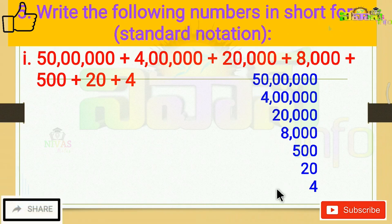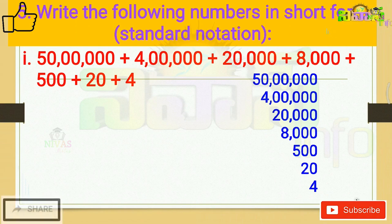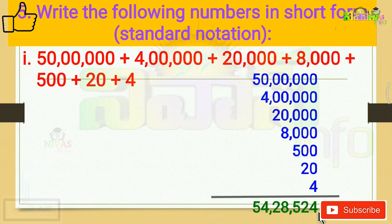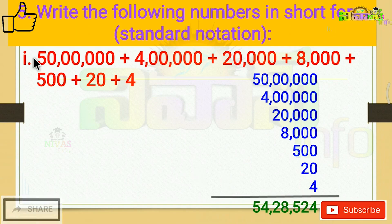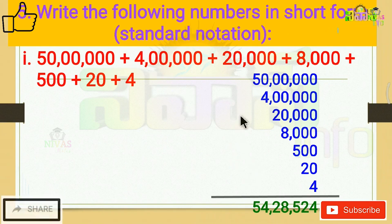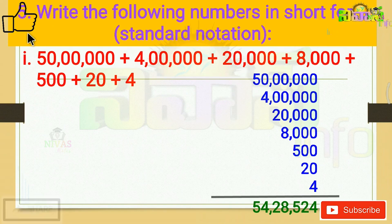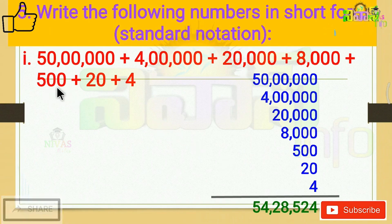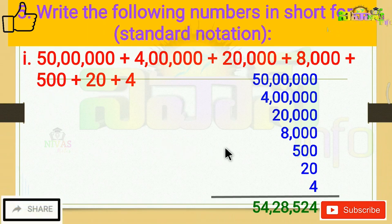If we place each digit correctly: 50 lakhs plus 4 lakhs plus 20,000 plus 8,000 plus 500 plus 20 plus 4. The answer is 54,28,524.